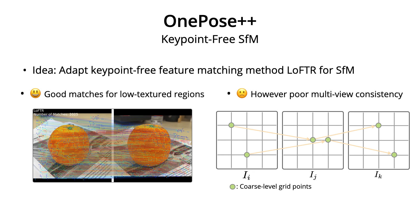For the keypoint-free structure from motion, our idea is to adapt the recent semi-dense feature matching method LoFTR for SFM. LoFTR has shown strong capability in matching low-textured regions thanks to its keypoint-free design. However, its coarse-match-then-refine mechanism is two-view dependent. This nature leads to inconsistent matches and fragmentary feature tracks in the multi-view scenario. Therefore, keypoint-free feature matching is not suitable for direct application to structure from motion.